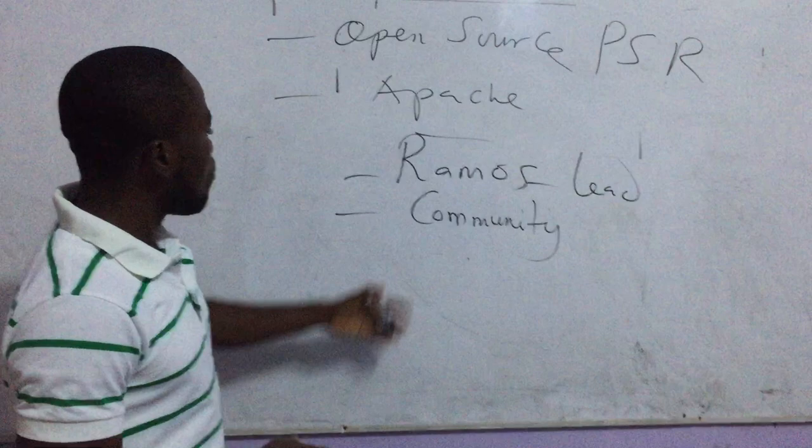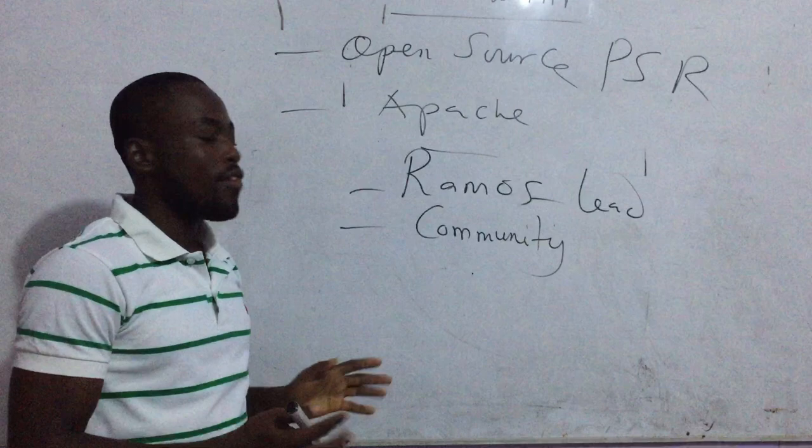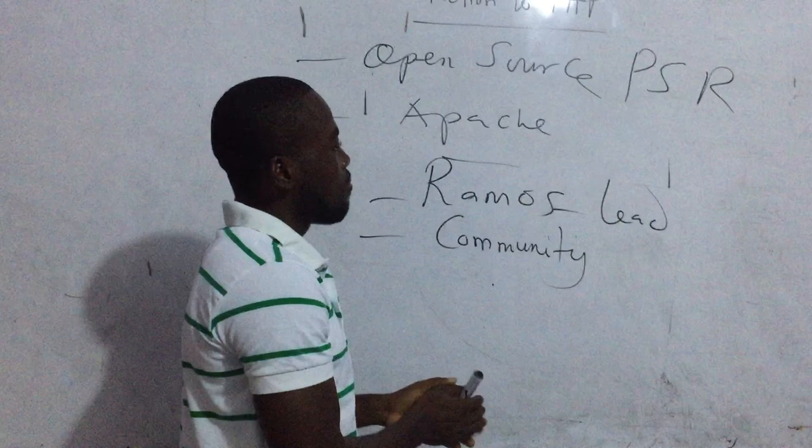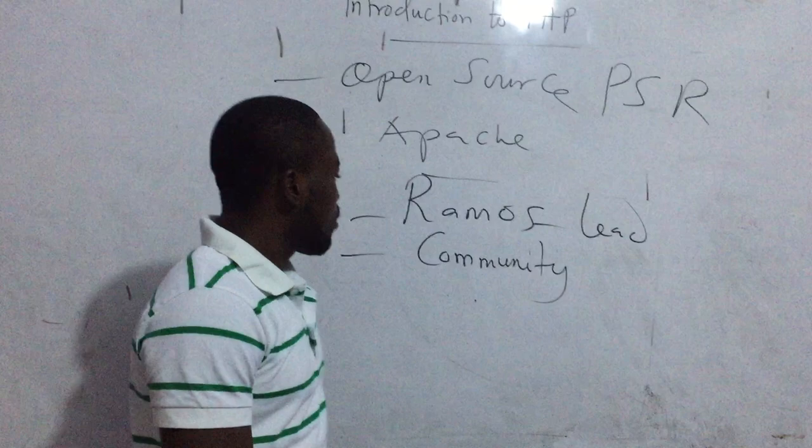When a language is open source, it means the source code is available — you can download it and modify it, as long as you conform to the license, which for PHP is the Apache license. The lead and community come together to produce the specification requirements for the language, which is open source community work.